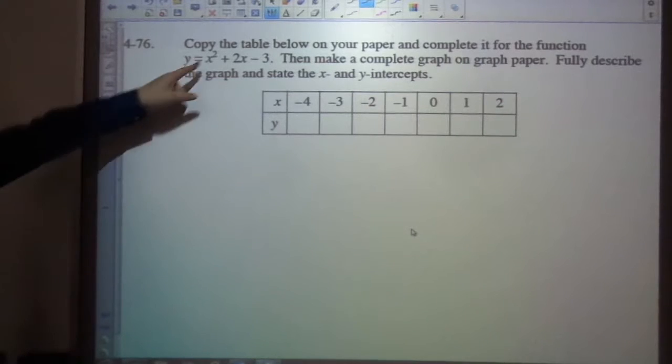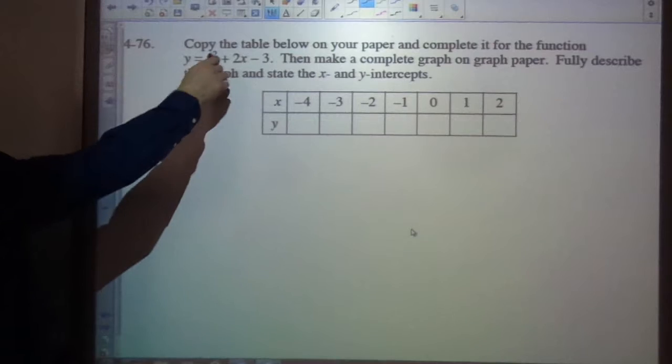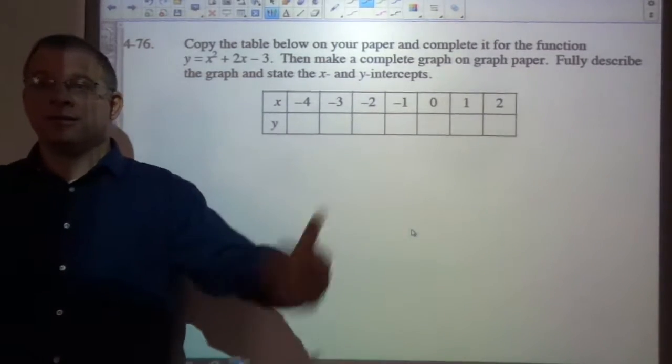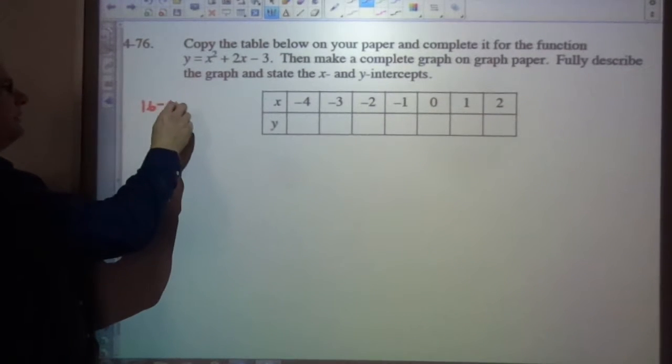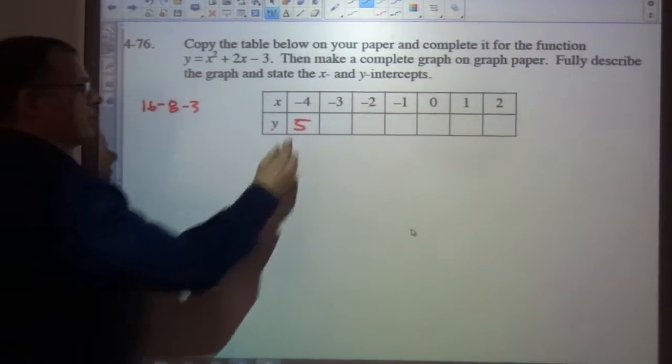So let's put these numbers in for x. If you put x squared, negative 4 squared is 16 minus 8 minus 3. 16 minus 8 is 8. 8 minus 3 is 5. Good.